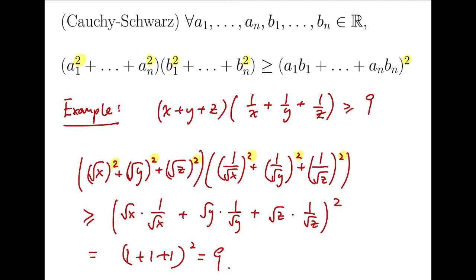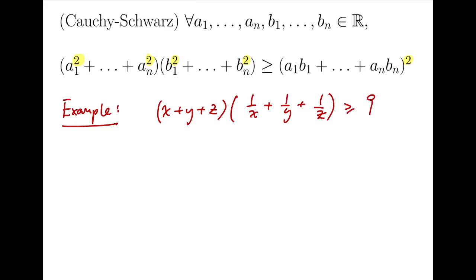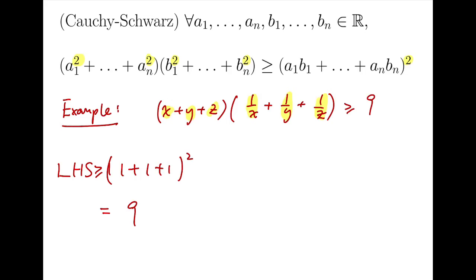But it will be much faster if we reorder our steps, which is to first multiply and then take the square root. Let's use this example again. If we do the multiply step first, look at the corresponding terms: x times 1 over x is 1, y times 1 over y is also 1, and z times 1 over z is also 1. We square root these terms — they're again just 1, 1, and 1. So we can say this expression is at least (1 plus 1 plus 1) whole squared, which is just 9.